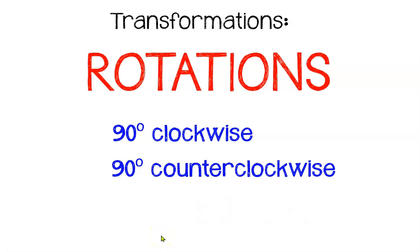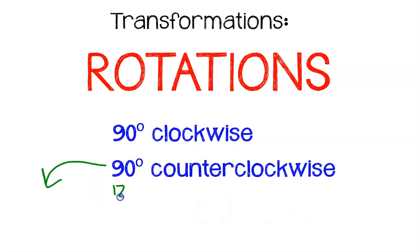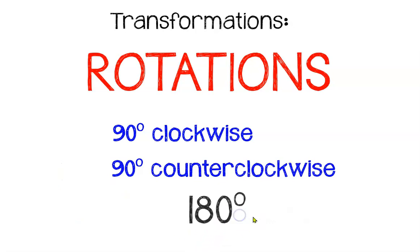In this tutorial, we'll be talking about rotations about the origin. You can rotate around different points on a coordinate plane, but this particular tutorial will be solely around the origin. You can make a 90 degrees clockwise rotation — that's when you go with the numbers of the clock — or a 90 degrees counterclockwise rotation, where you go against the numbers of the clock. You can also make 180 degrees, which would be two 90-degree turns, or even 270 degrees, which would be three 90-degree turns.